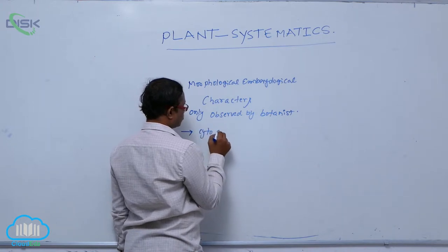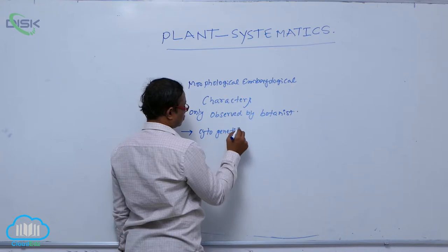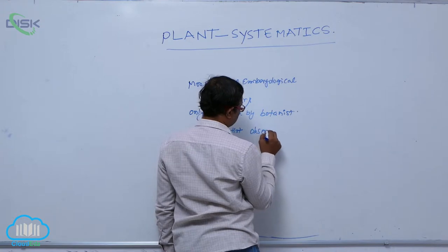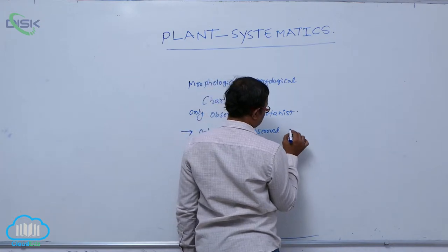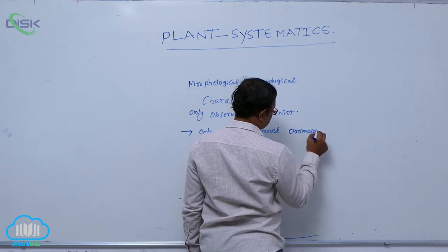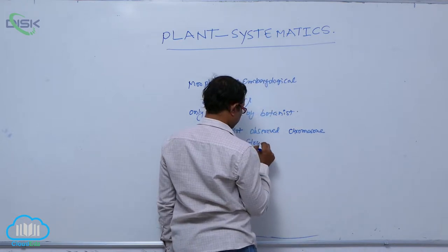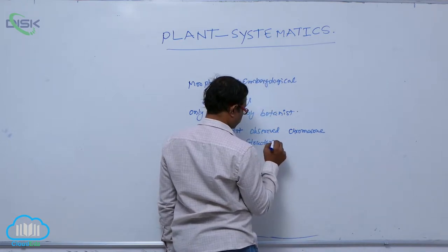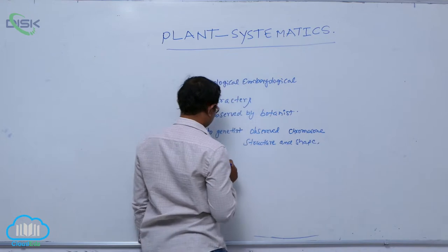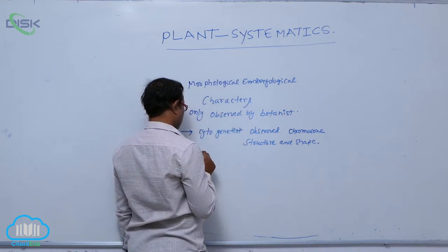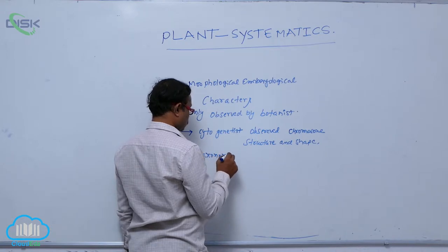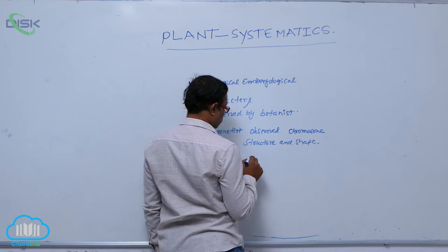For example, cytogenetics — the chromosome structure and shape — can only be observed by the taxonomist.